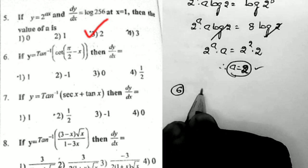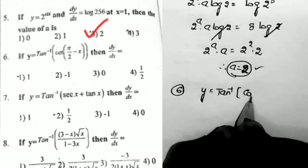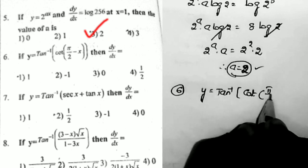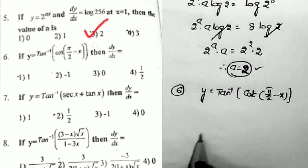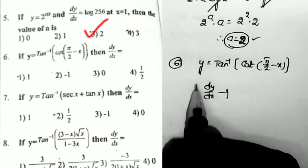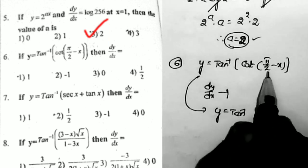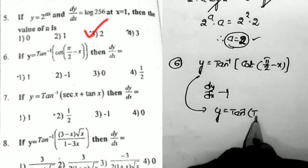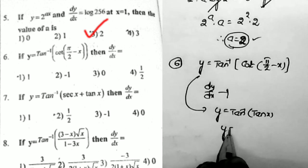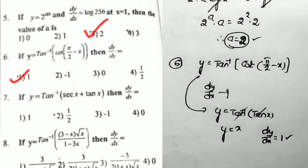Sum number 6: given y = tan⁻¹(cot(5x/2 − 6)), find dy/dx. Here, cot(5x/2 − 6) = tan x, so tan⁻¹(tan x) cancels, giving y = 5x/2 − 6. Therefore dy/dx = 5. That is the first option.